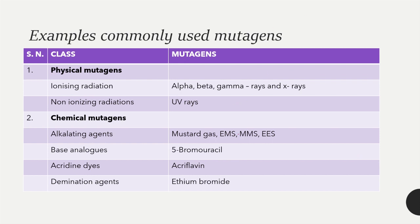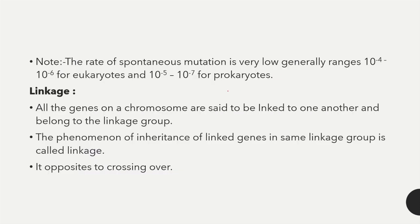Physical mutagens are classified as ionizing radiation and non-ionizing radiation. Examples of ionizing radiation are alpha rays, beta rays, gamma rays, and X-rays. Non-ionizing radiation includes UV rays. Chemical mutagens include mustard gas, 5-bromouracil, acriflavin, and ethidium bromide. The rate of spontaneous mutation ranges from 10⁻⁴ to 10⁻⁶ for eukaryotes and 10⁻⁵ to 10⁻⁷ for prokaryotes.